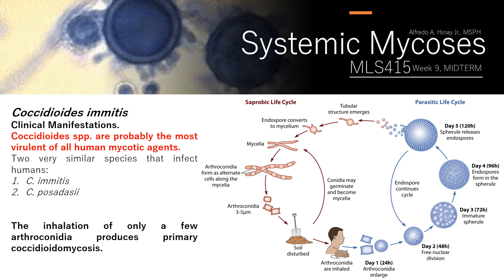If you observe the life cycle, in the saprobic life cycle, the organism is commonly found in soil. Man serves as the accidental host — the arthroconidia enter via inhalation and then form spherules. The spherules production and development will be shown in the next slide.